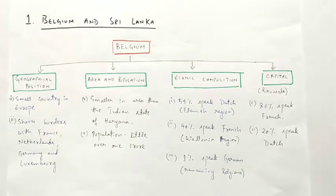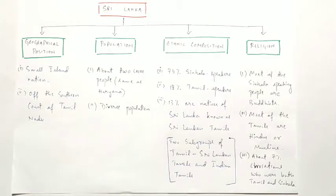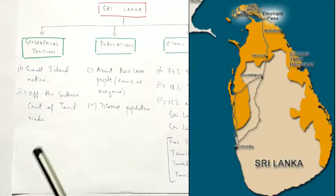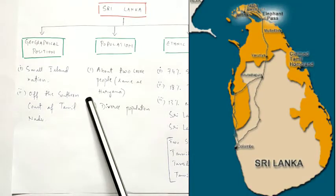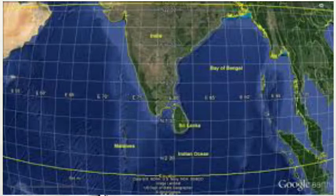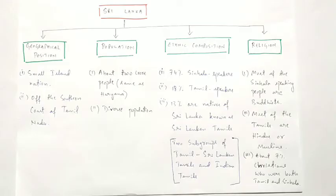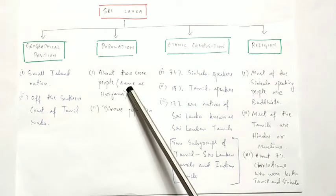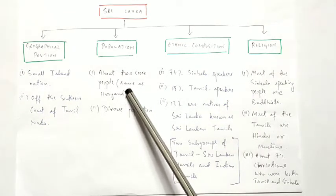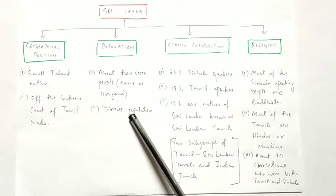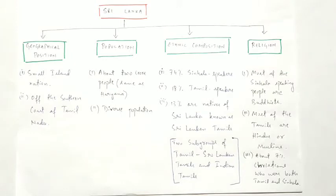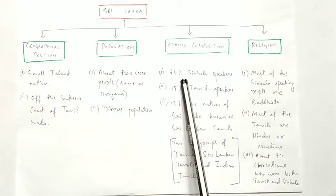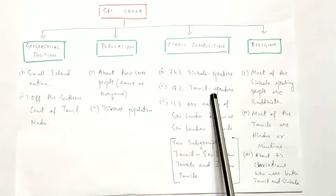Sri Lanka is an island nation just a few kilometers off the southern coast of Tamil Nadu. It has a population of about two crore people, almost the same as Haryana, and it has a diverse population like other nations in the South Asia region. There are mainly two languages spoken here — Sinhala speakers, who account for 74 percent, and Tamil speakers, who account for 18 percent.